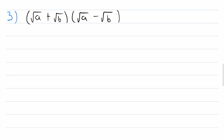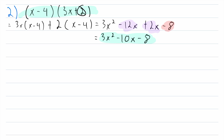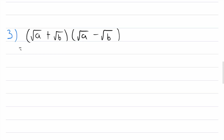Onwards to example three — I think this is a neat little expression. We'll use the distributive property similarly to before. If you're familiar with factoring the difference of squares, this might look a little familiar. I'll expand this in a slightly different way to show an alternative approach. Up in example two, we took the whole term x minus 4 and multiplied it by 3x, then by 2. Instead, we could multiply each term individually — x by 3x, x by 2, negative 4 by 3x, and so on.